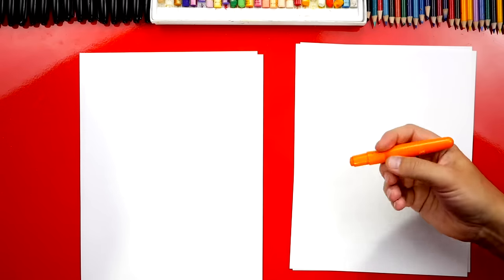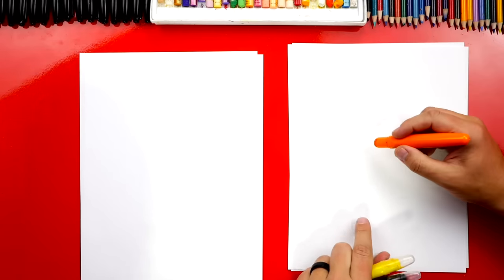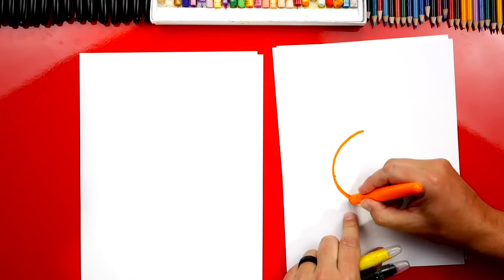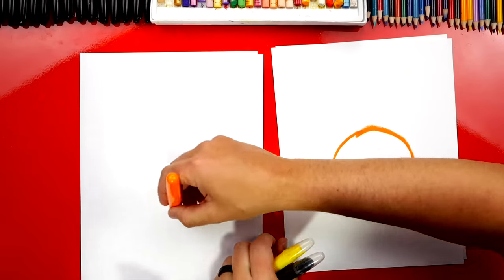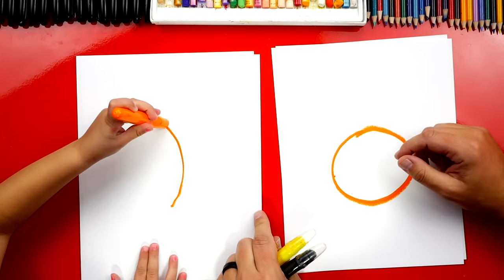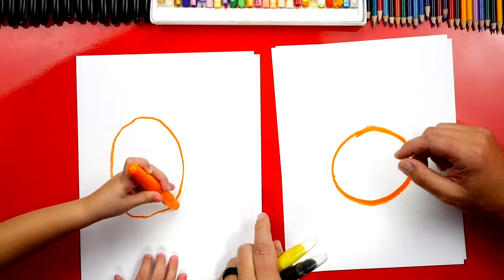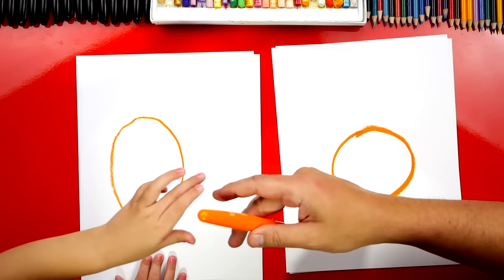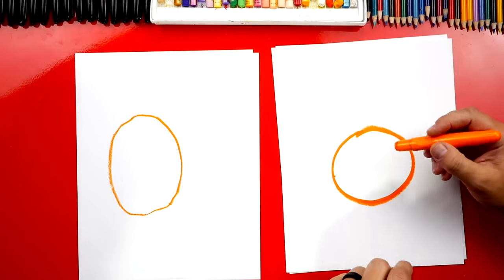Let's first start with our orange crayon and we're going to draw a circle. We're going to draw a big circle in our paper right here. Big circle. Oh yes. It looks like an egg. That's okay.